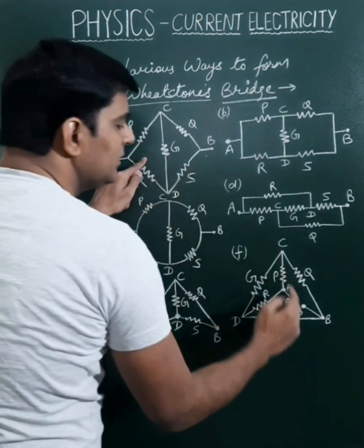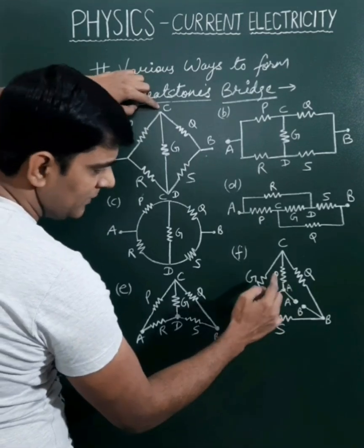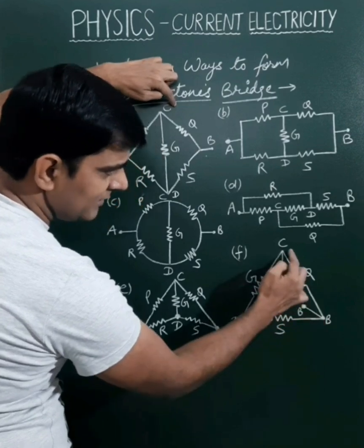Let us compare this circuit with this. The P resistance is connected between A and C. The Q resistance is between B and C.